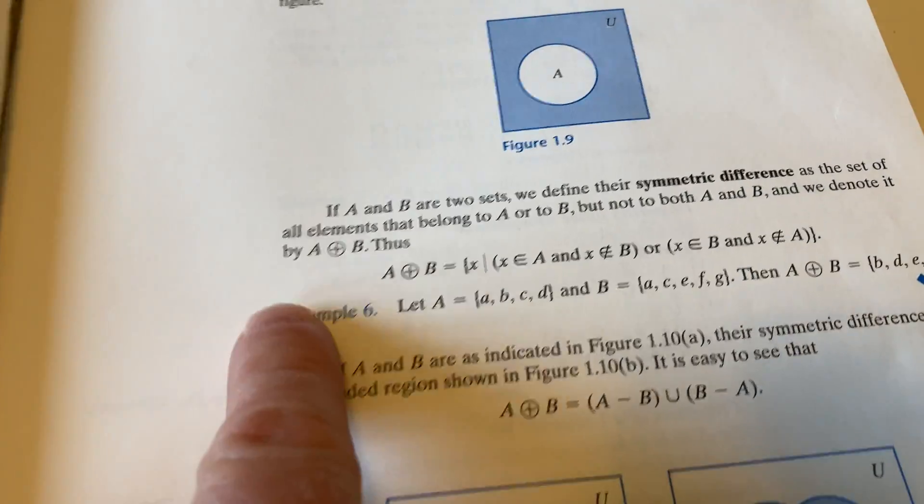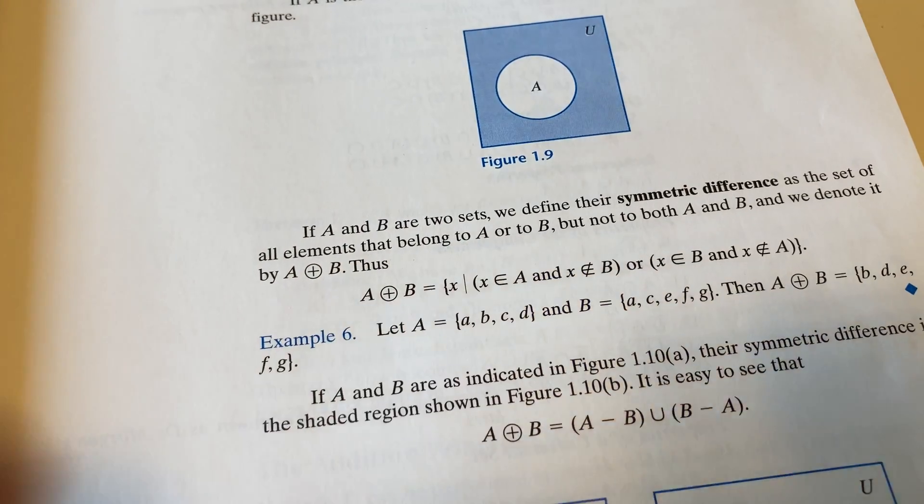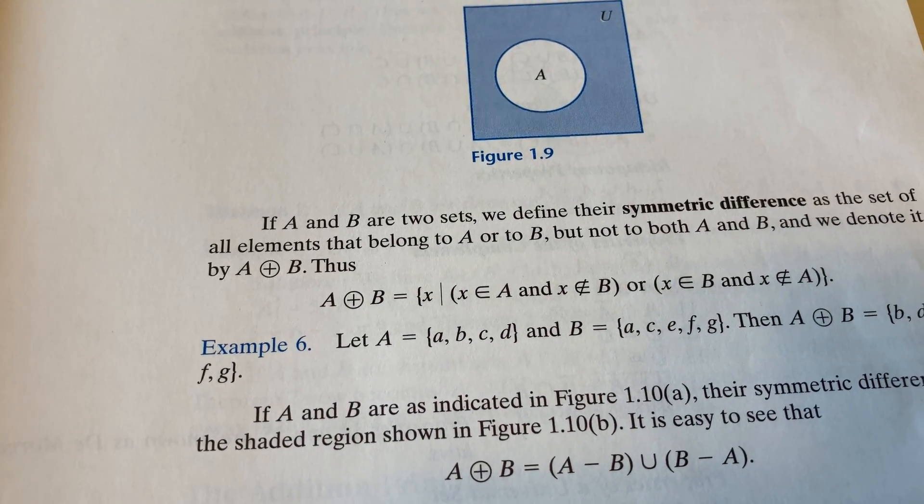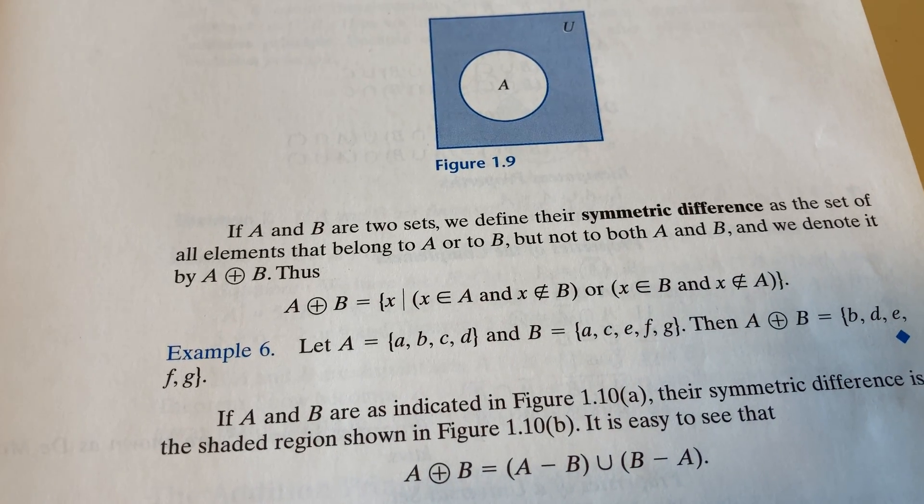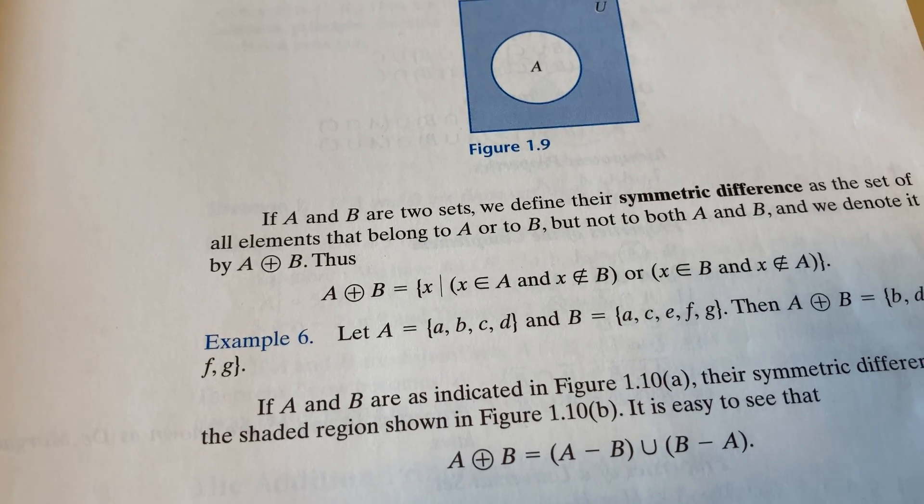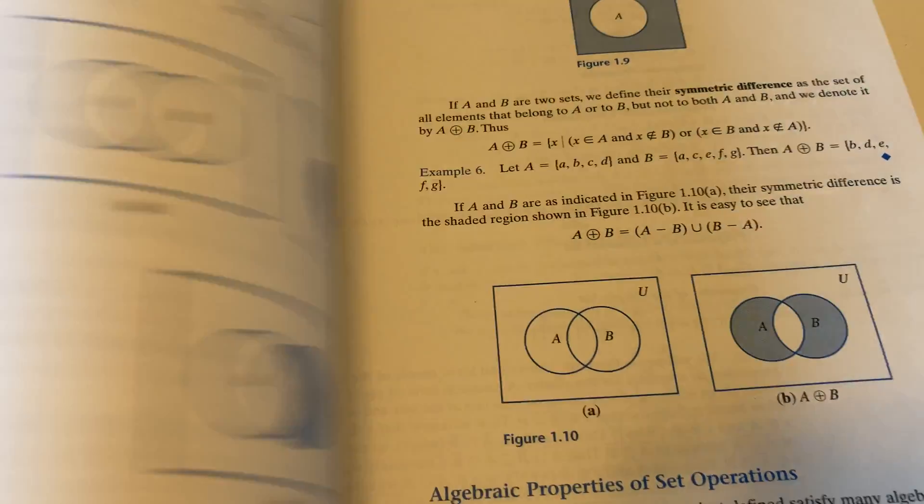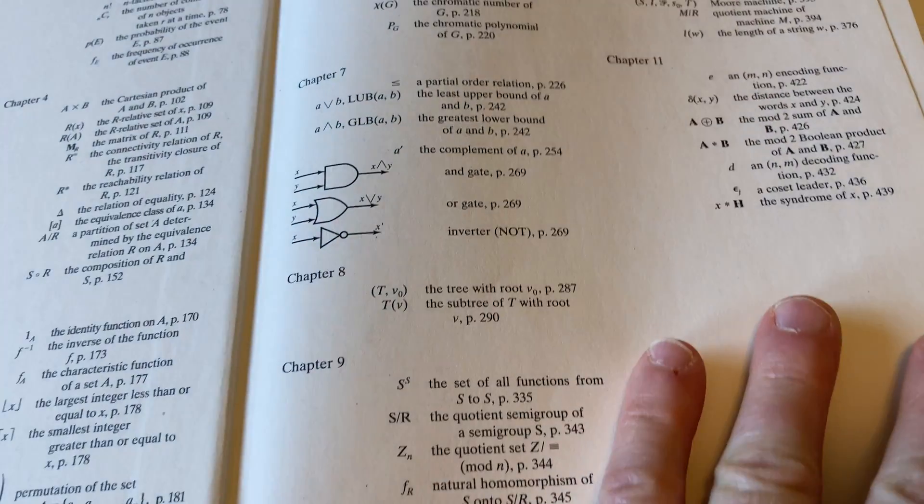So page nine. Yep, there it is. If A and B are two sets, we define their symmetric difference as the set of all elements that belong to A or B, but not to both. And we denote it by A circle plus B. Really cool. Yeah, so I think that's one of the really cool things about this book that makes it really good for beginners.